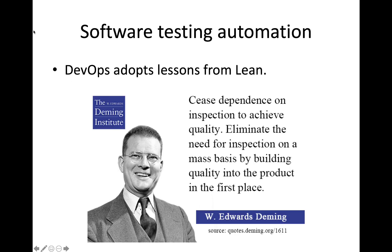DevOps methodology borrows some of the lessons learned from lean. Edwards Deming, one of the grandfathers of the lean movement, said that companies need to cease their dependence on inspection in order to achieve quality. Companies can essentially eliminate the need for inspection by building quality into the product.